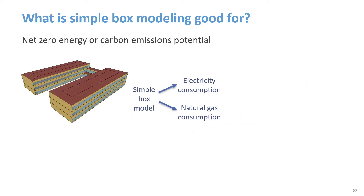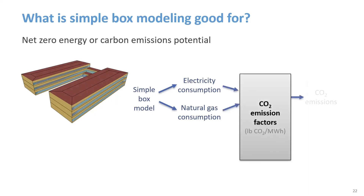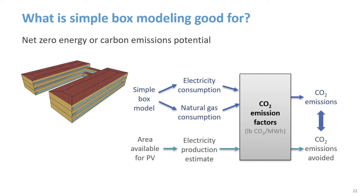A simple box model can also be used to check if a concept design is on track for net zero energy or net zero carbon emissions. The model provides an estimate of electricity and gas consumption, and CO2 emission factors can translate that into CO2 emissions. A separate calculation can estimate energy production from on-site photovoltaics and the corresponding emissions avoided, showing whether you're on track or need to reduce energy consumption or increase the area available for a PV system.